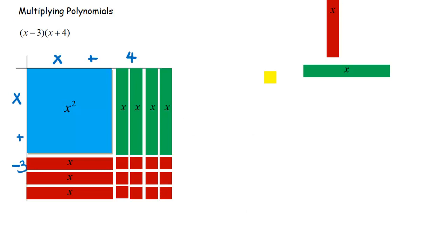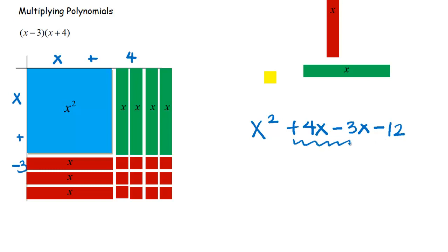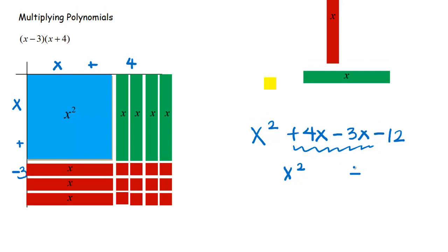Now if I write out the answer I just need to add like terms. Does x squared have any like terms? No — he's the only x squared. So: x squared, then four x's gives plus 4x, and three negative x's gives minus 3x, and the twelve negative unit tiles give minus 12.